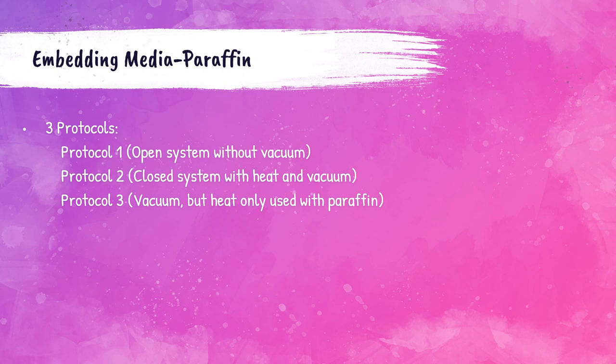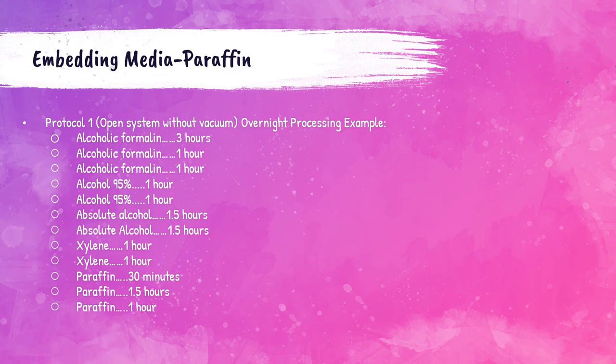There are three different protocols for paraffin embedding. Protocol one utilizes an open system without vacuum. Protocol two utilizes a closed system with both heat and vacuum. Protocol three utilizes vacuum only, with heat used only with paraffin. Here is an example of routine overnight processing utilizing protocol one — an open system without vacuum.